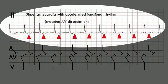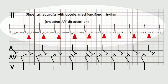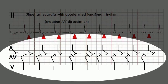The second possibility is sinus tachycardia with accelerated junctional rhythm creating AV dissociation. As seen in the latter diagram, the atrium and the ventricles are beating independent of each other, otherwise known as dissociated. The inverted P from the junctional beat that we expect cannot be seen because the atrium is already depolarized by an impulse coming from the sinoatrial node, and the impulse from the junction going up the atrium is already blocked.